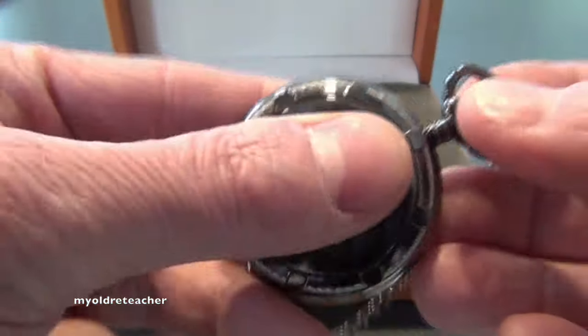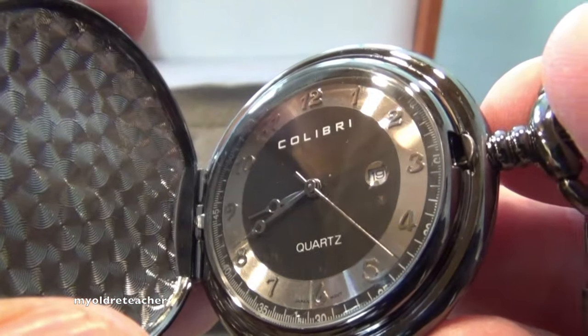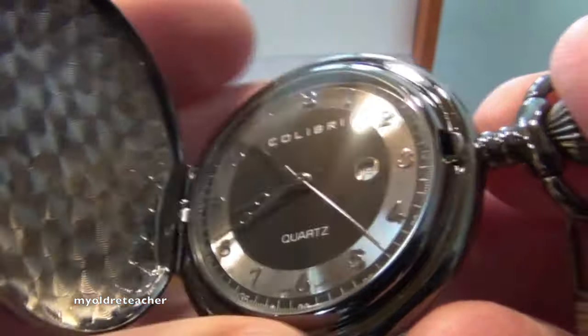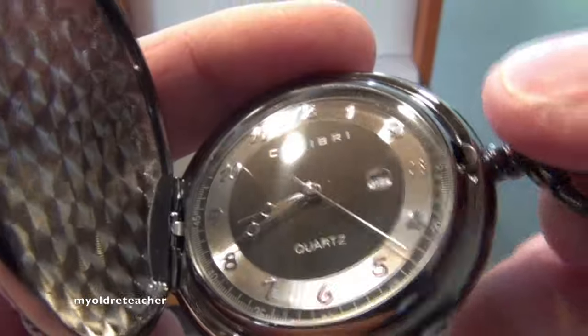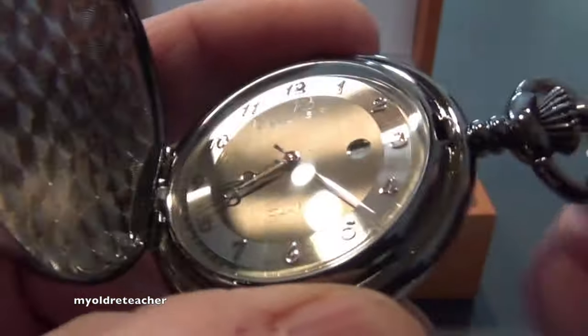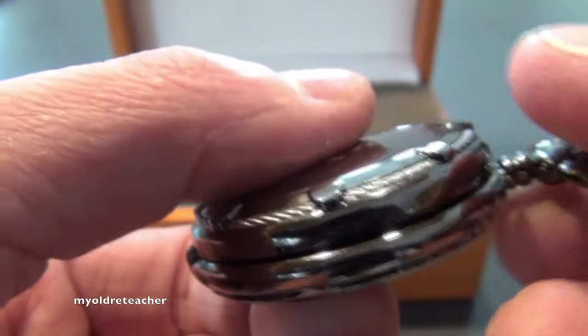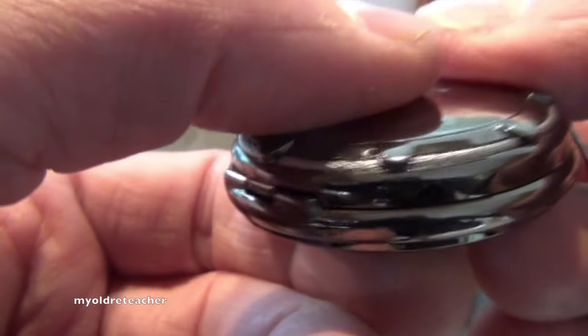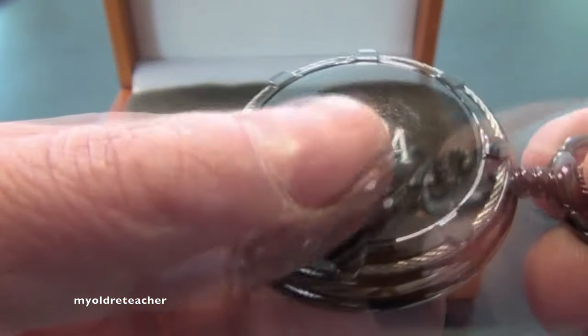If we had never even seen a watch being made, we could still infer from its nature that it had been designed and made. If the watch didn't keep good time or didn't even work, we could still infer that it had been made by someone. If we did not know how the watch worked or what all its various parts did, we could still infer from its nature that it had been designed and made.